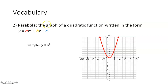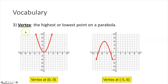The second vocabulary term is a parabola. That is the graph of a quadratic function written in the form y equals ax squared plus bx plus c. You can see that it creates this u-shaped graph we call a parabola. A vertex is the highest or lowest point on a parabola. If the parabola opens upward, the vertex is the lowest point; if it opens downward, the vertex is the highest point.